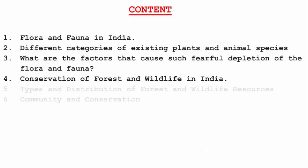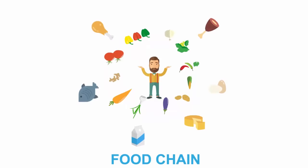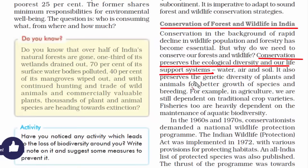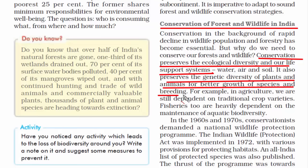The fourth topic is conservation of forest and wildlife in India. Conservation preserves ecological diversity and life support systems, as there is constant interaction among organisms and their environment. Without a conservation policy, humans will consume every resource, leaving nothing for future generations. Since much of our food today is genetically produced — scientists modifying genes to create new varieties of plants and animals — it is crucial that we preserve the genetic diversity of plants and animals.